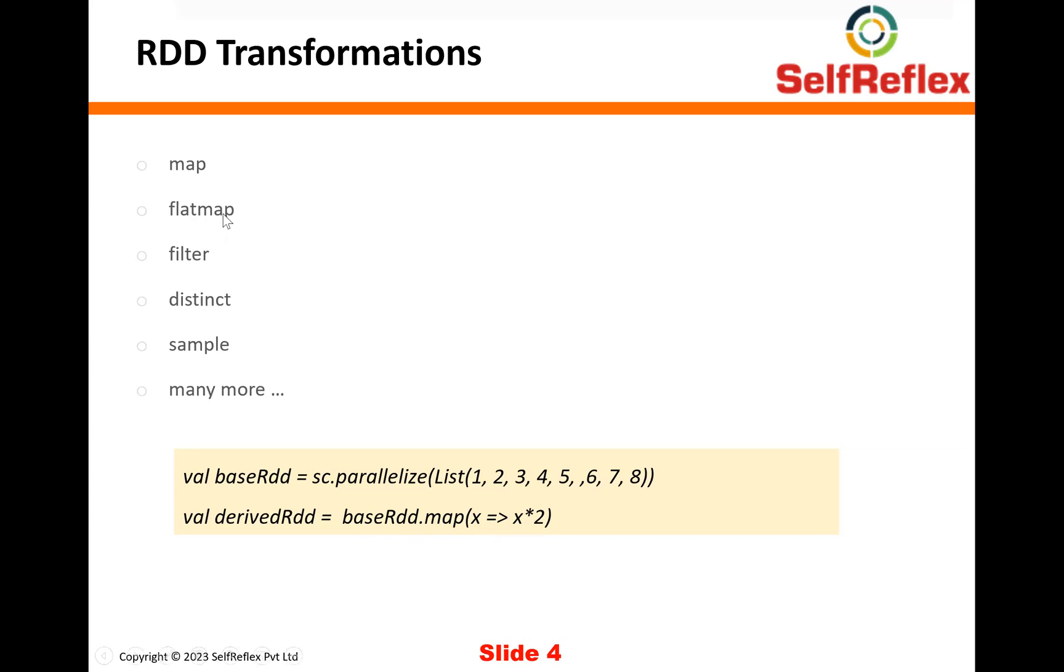Then there are other transformations like flat map, filter, distinct, sample, and there are many more transformations. We will discuss these transformations in detail in other lectures. But from concept point of view, you can apply different transformations based on your need on any RDD. So what happens is when you apply a transformation, it basically returns you another RDD. And then you can apply other transformation on that new RDD and it will again return you an RDD. And it's basically a series of RDDs that you keep getting.